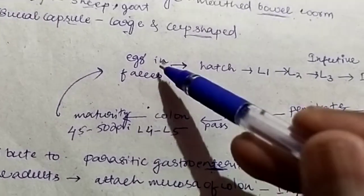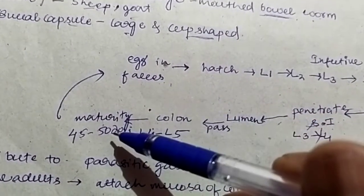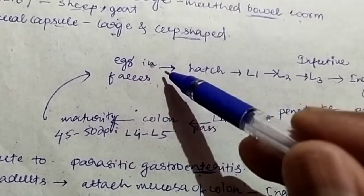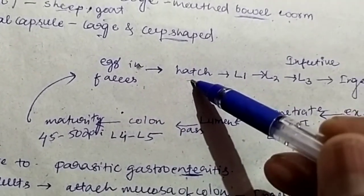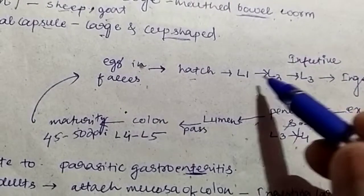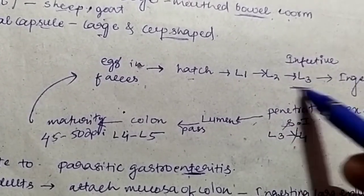Now let us come to the life cycle. The eggs are passed in the feces of the host. Then those eggs are hatched in the environment to produce L1, L2, and finally infective L3 stage larva.